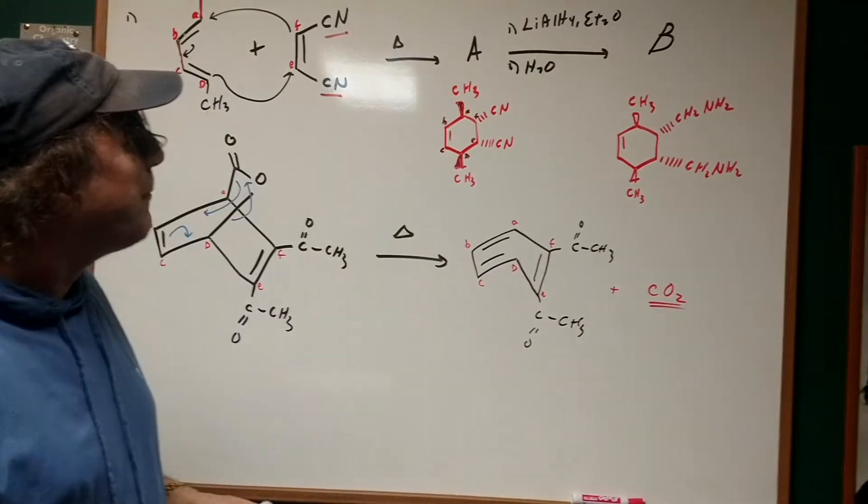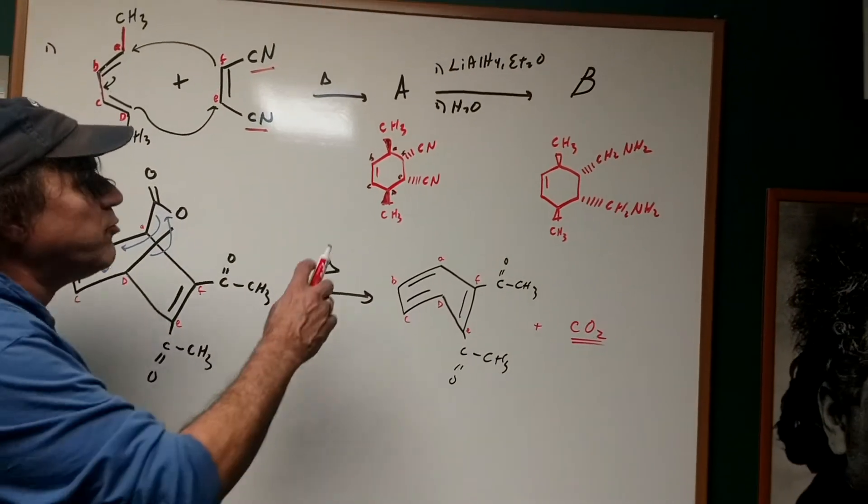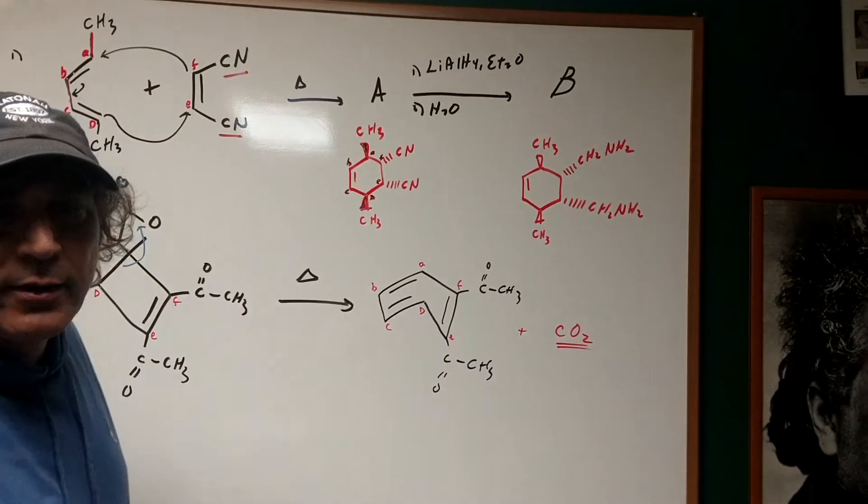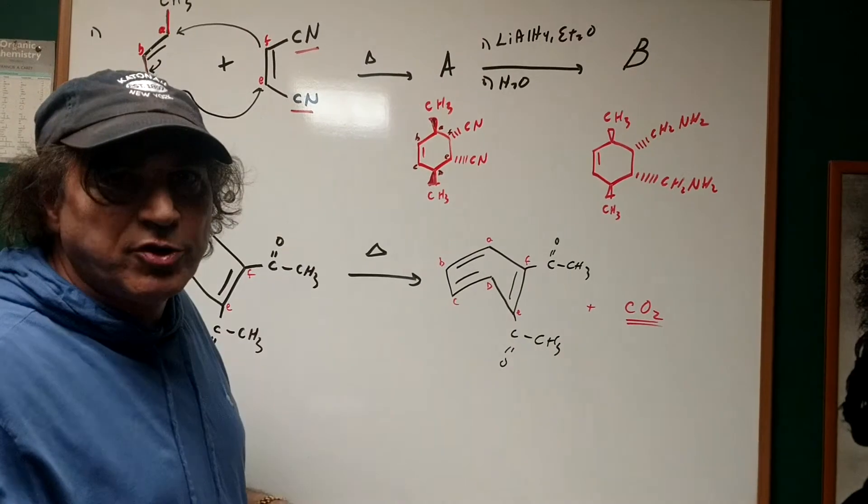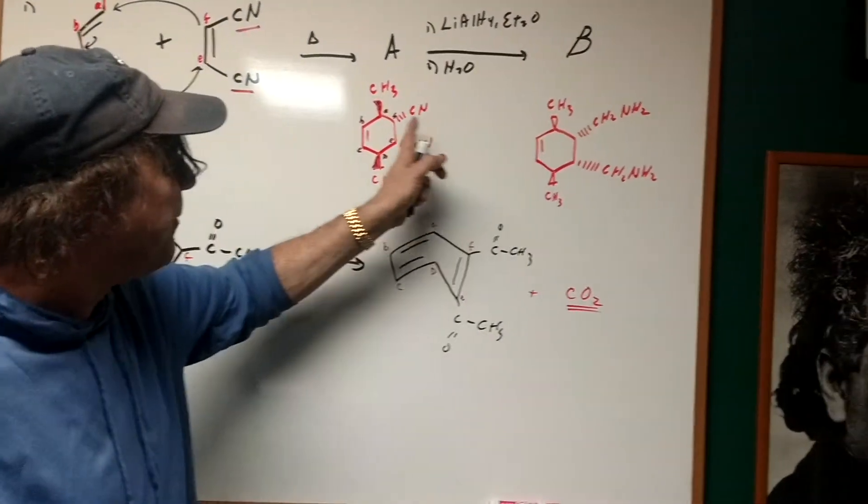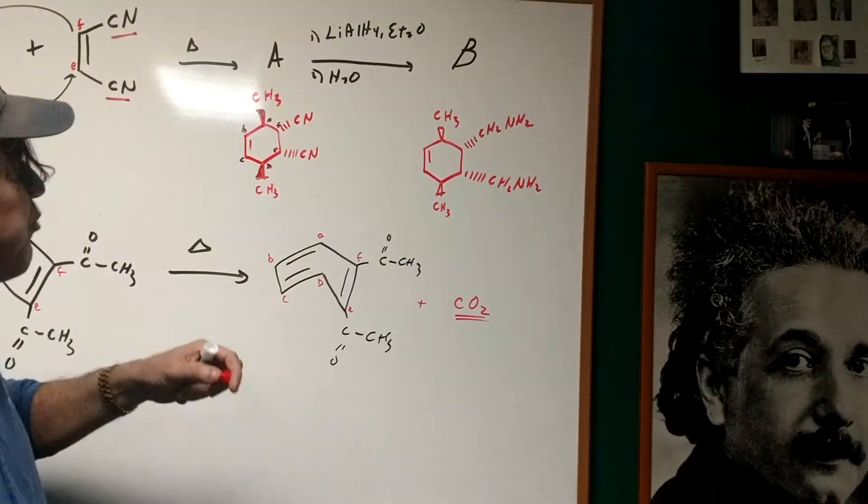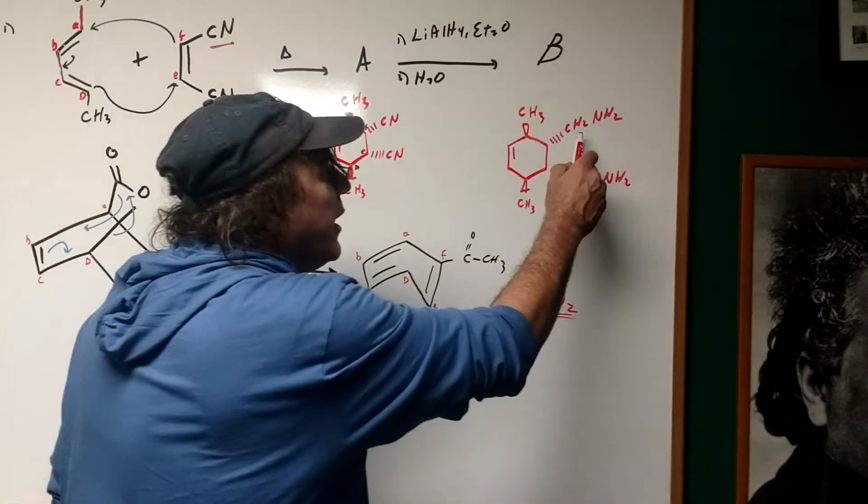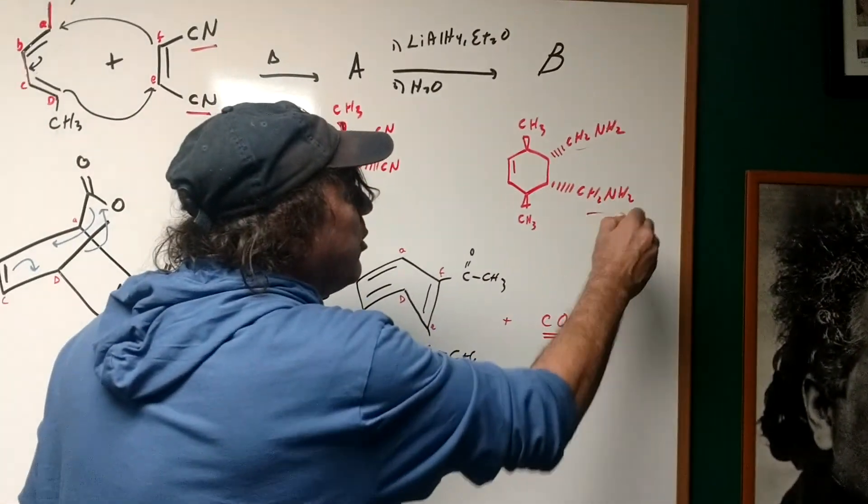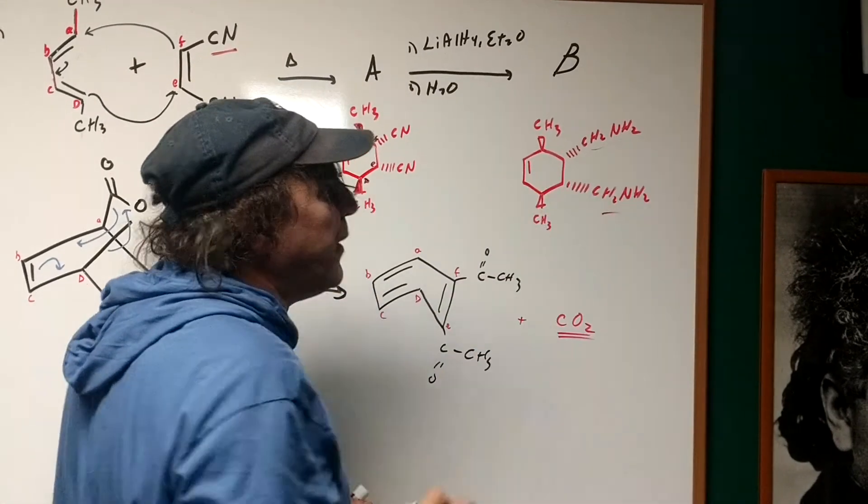Once I do that, I'm going to do a simple reduction. In the reduction, lithium aluminum hydride doesn't touch carbon to carbon bonds, but it's certainly going to reduce the nitrile down, keeping the stereochemistry. Since I'm not breaking any bonds on the carbon, I'm going to reduce the nitrile into the CH2-NH2 group. And that would be the final product.